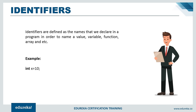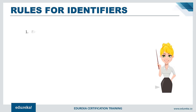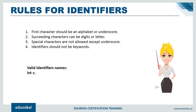For example: int x = 10, where int is the data type and x is the variable name storing value 10. Some basic rules for declaring identifiers: the first character must always be an alphabet or underscore; succeeding characters can be digits or letters; special characters are not allowed except underscore; and identifiers must not be keywords.